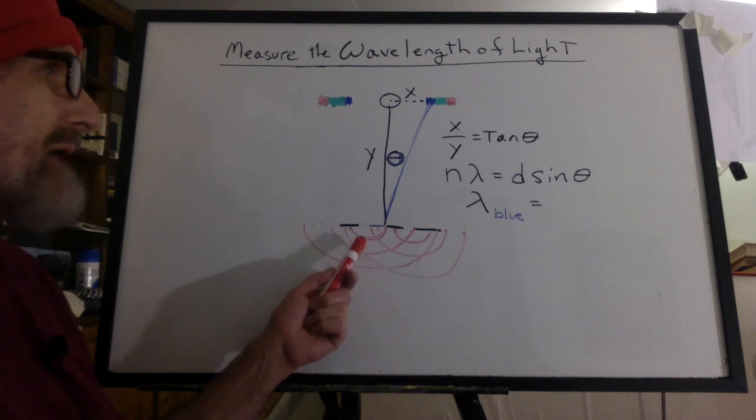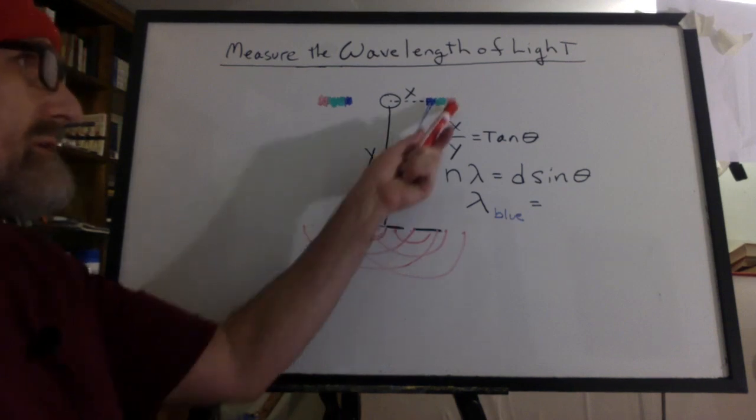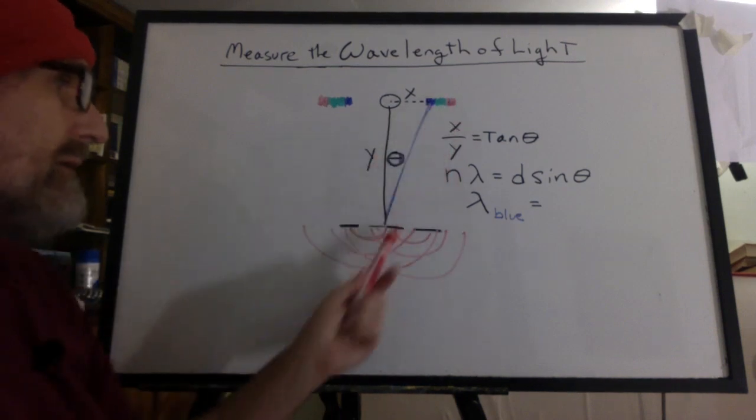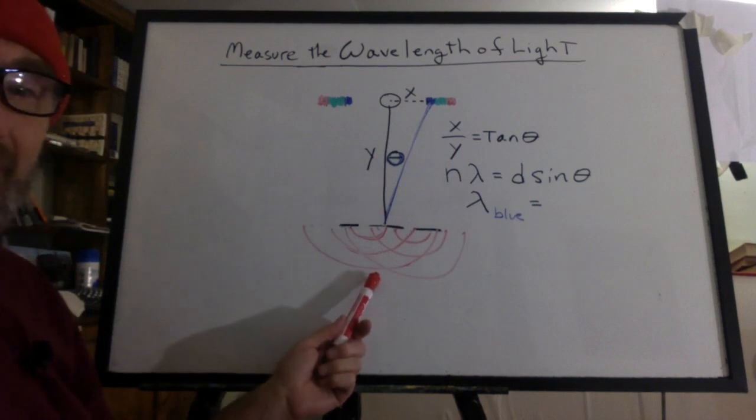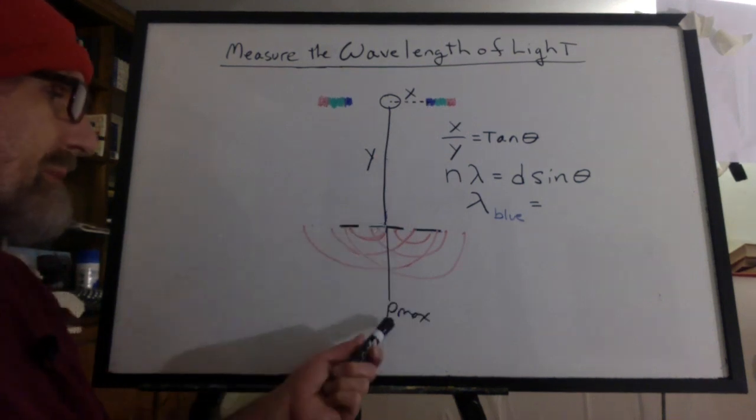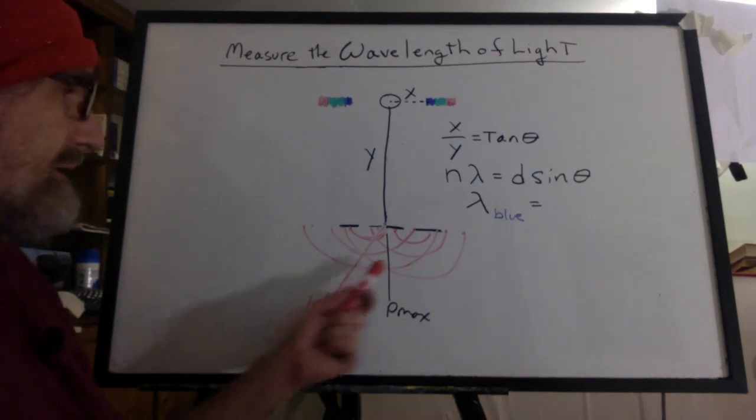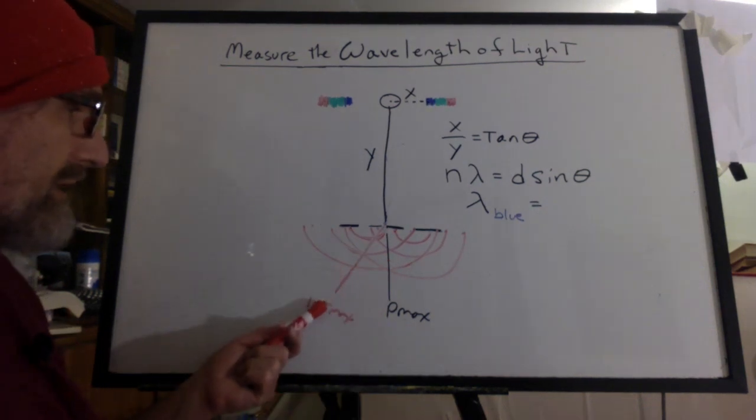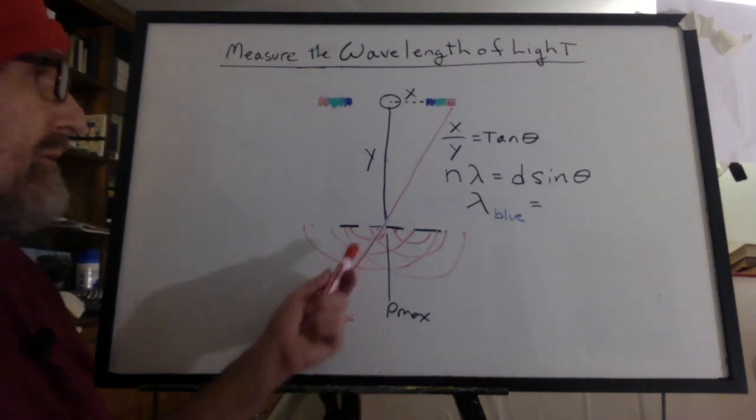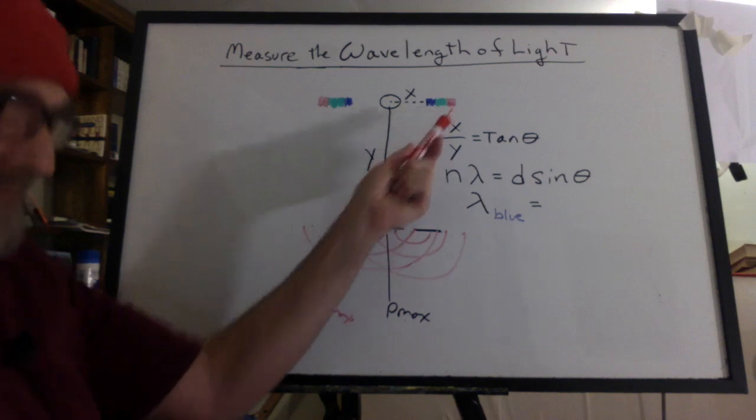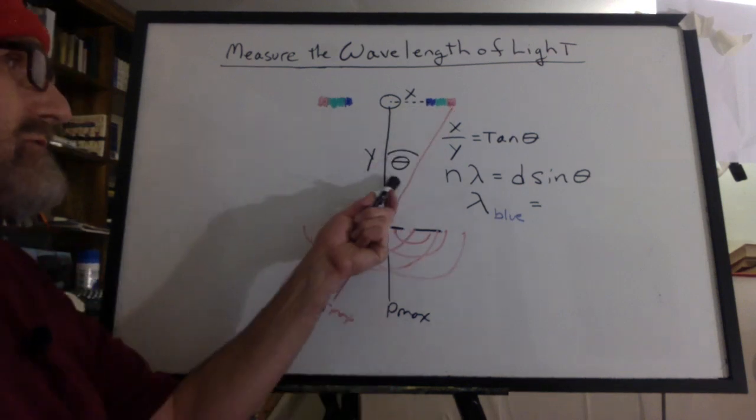Well, that was an interference pattern for blue light. Well, there's also going to be one for all the colors. And we'll take a look at the red light now. Of course, there'll be a principal maximum right down the middle. And we move our eye over and we'll intercept the first maximum. It will appear to be coming from over here.